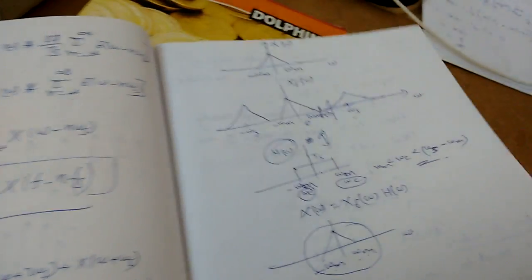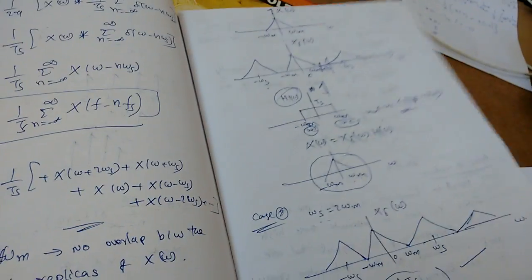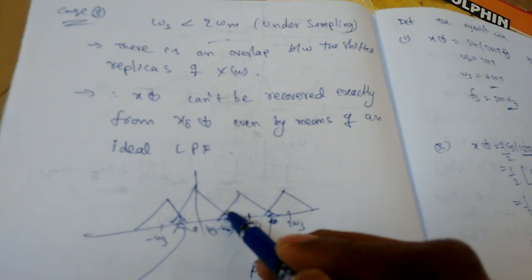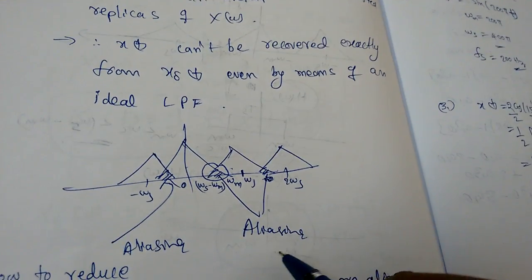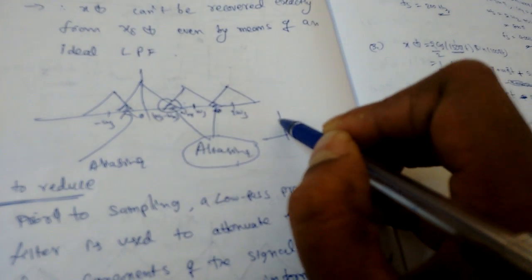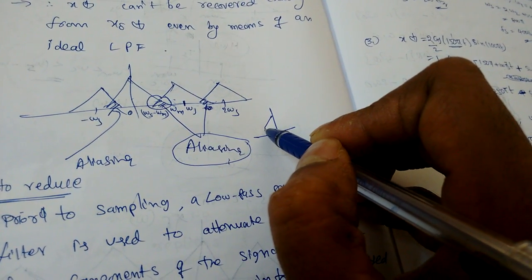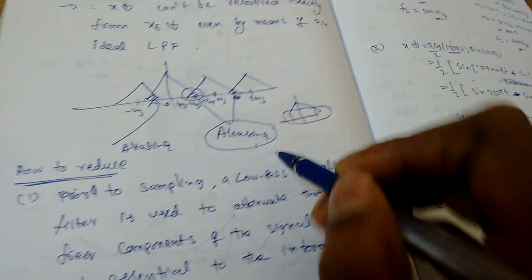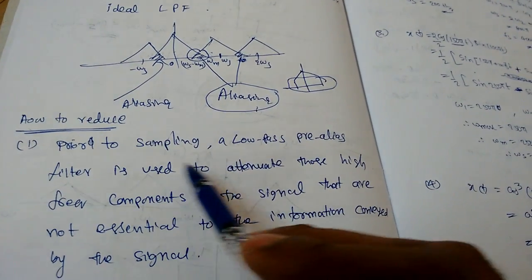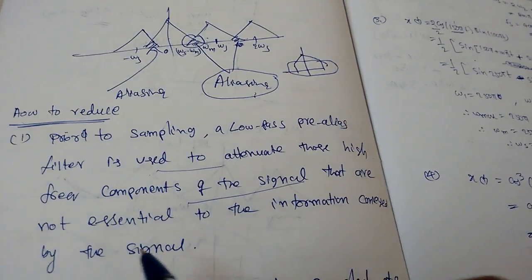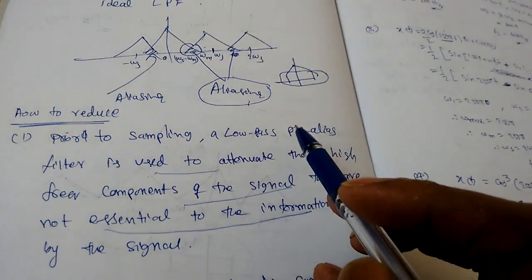In case two, if omega_s is greater than 2*omega_m we have over-sampling — still no aliasing. The critical case is omega_s equal to 2*omega_m, which is the edge of aliasing. If omega_s is less than 2*omega_m, we have under-sampling and the adjacent spectral copies overlap — this is the aliasing effect. Due to aliasing we get distortion in the recovered signal; some information is missing. To reduce aliasing, before sampling a low-pass pre-aliasing filter is used to attenuate high-frequency components not essential to the information.